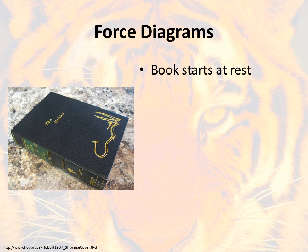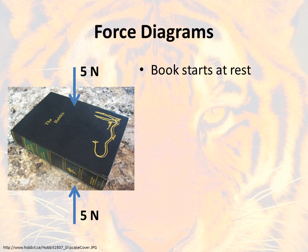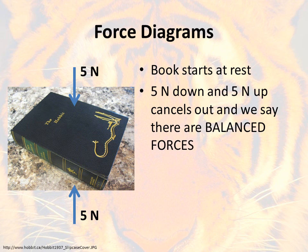The first thing we want to look at is a force diagram. A lot of times when these are done in class they use just a standard square to represent any object, but that square represents some real object. So for a force diagram, let's start with something as simple as a book starting at rest — this copy of The Hobbit is just sitting on my desk. Gravity pushes down on the book with five newtons of force and the desk pushes right back with another five newtons of force. That's five newtons pushing down, five newtons pushing up — they cancel each other out, and we call that a balanced force.